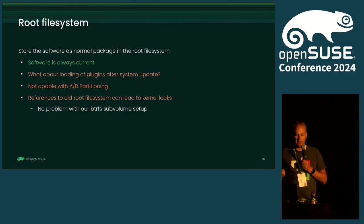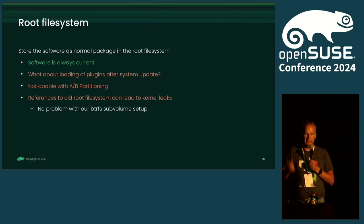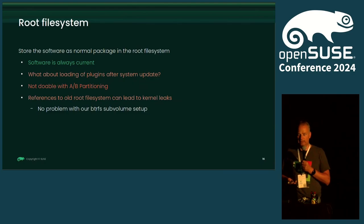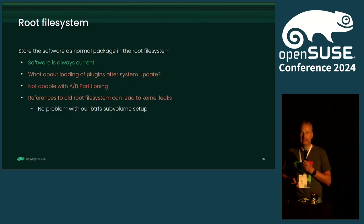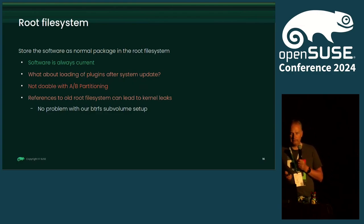Many distributions, especially embedded ones, use an A/B partition scheme: they start from partition A, apply the update to B, switch to partition B, then overwrite partition A. In this case, running a service from the root file system is not doable either, because if you update the new partition A you overwrite the application still running, which will definitely lead to a crash. That's why starting services off the root file system is not the best approach for us.